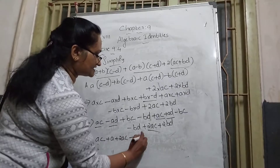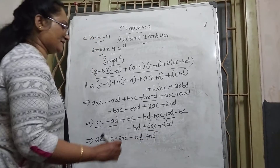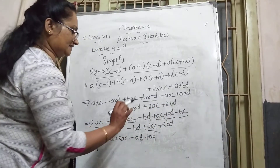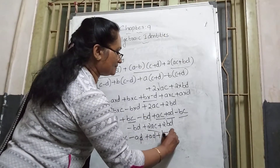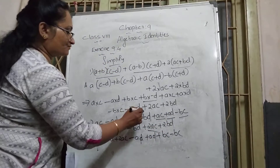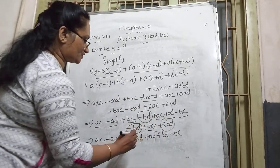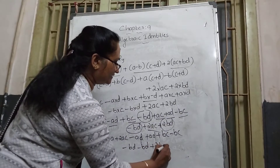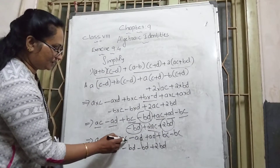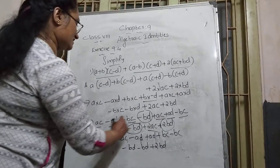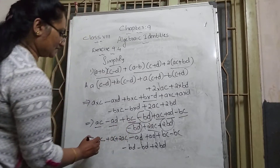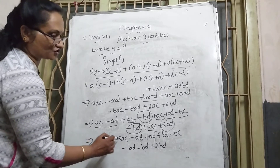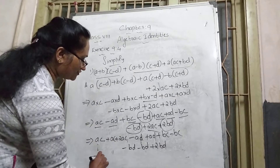−AD + AD cancel to 0. Then BC: we have +bc and −bc, so plus bc minus bc also cancels. For BD: we have −bd, −bd, and +2bd. Then for AC: coefficient 1 + 1 + 2 = 4, so we get 4ac.